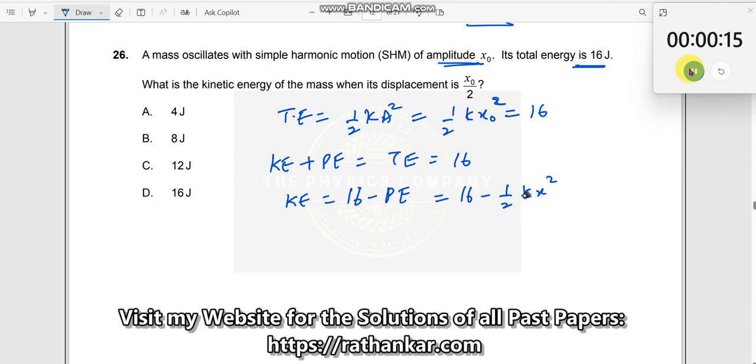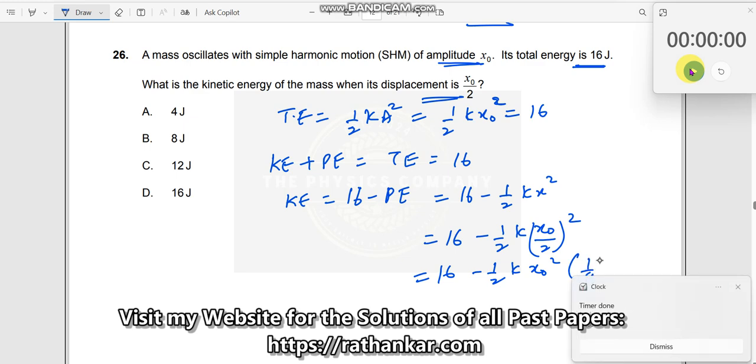It is not X0. So what is he asking? When the displacement is X0 by 2, so I will just substitute 16 minus half k into, here for X0 is actually X0 by 2, the whole square which would be 16 minus half k X0 square into 1 by 4, right?